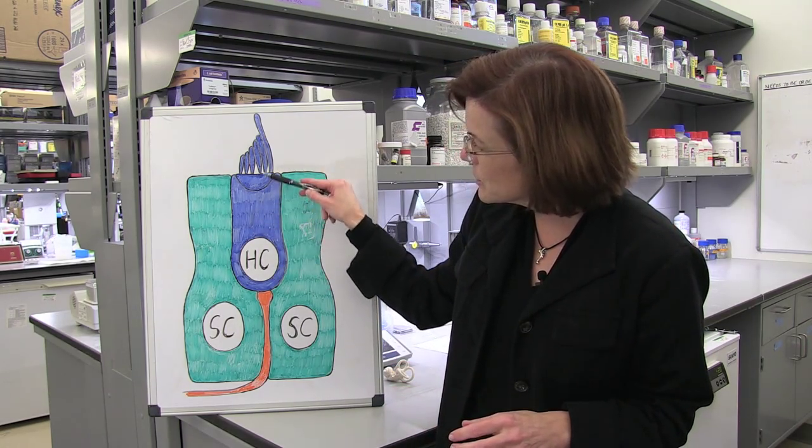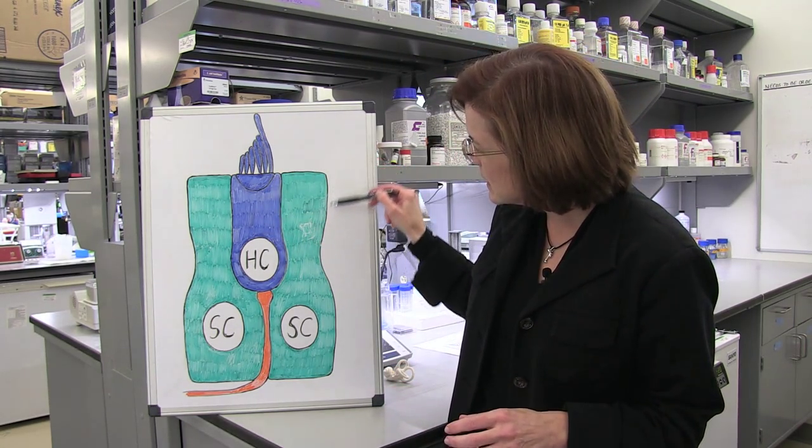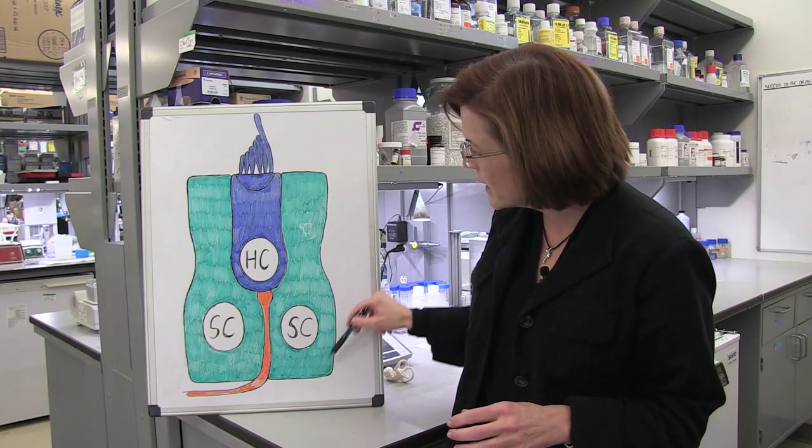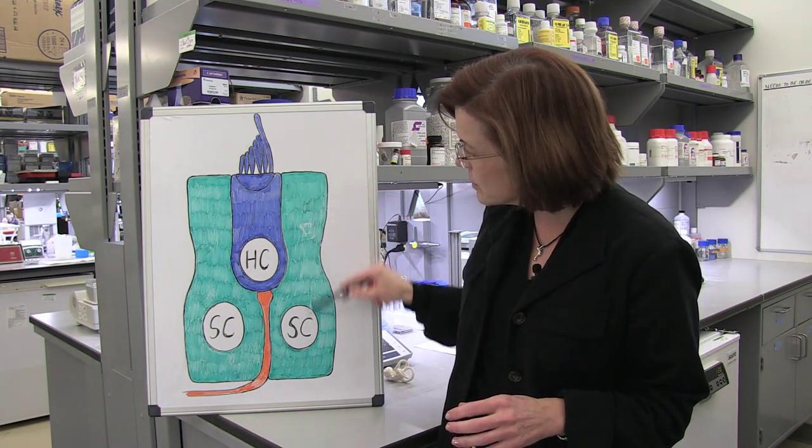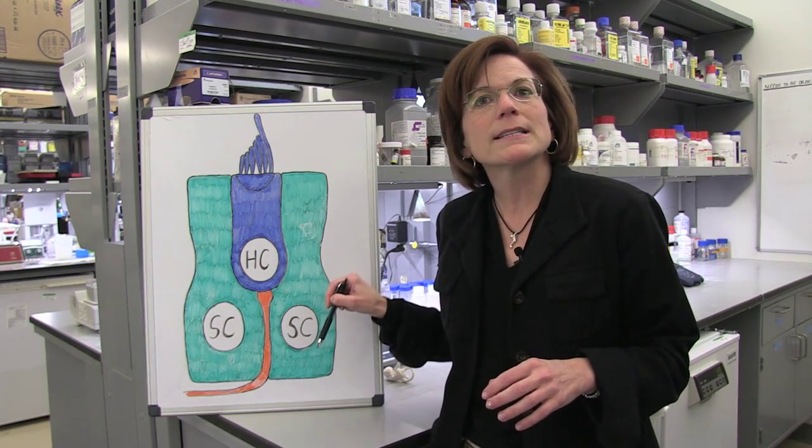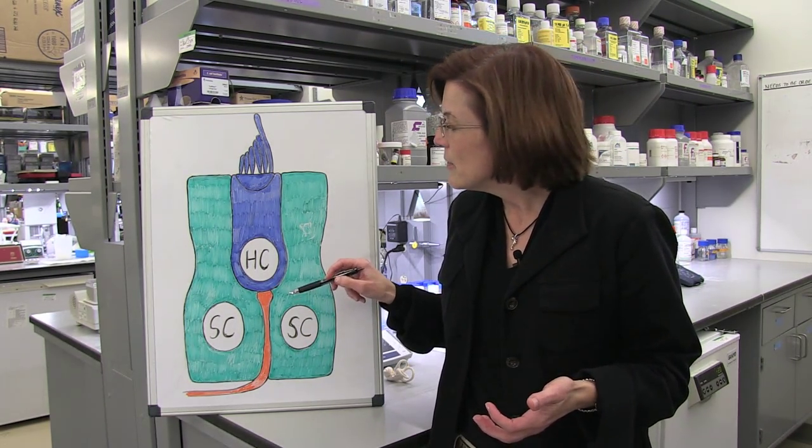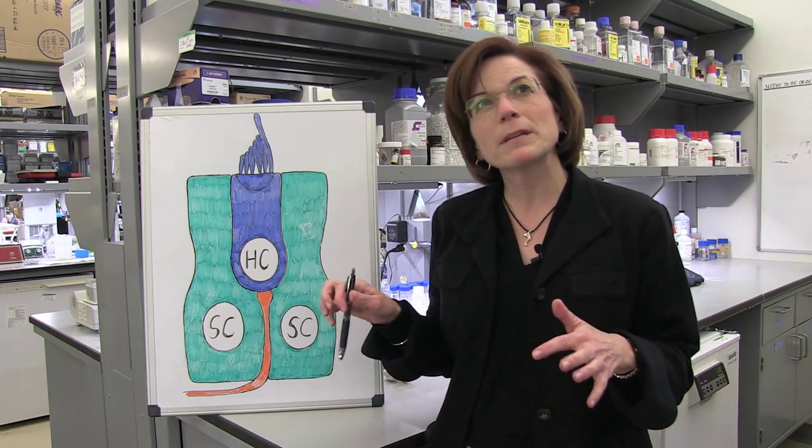And each of these sensory hair cells is completely surrounded in the inner ear by another cell type, which is schematized here in green. And these are called supporting cells. And supporting cells are glia-like cells that serve functions that are reminiscent of both astrocytes and microglia in the central nervous system.